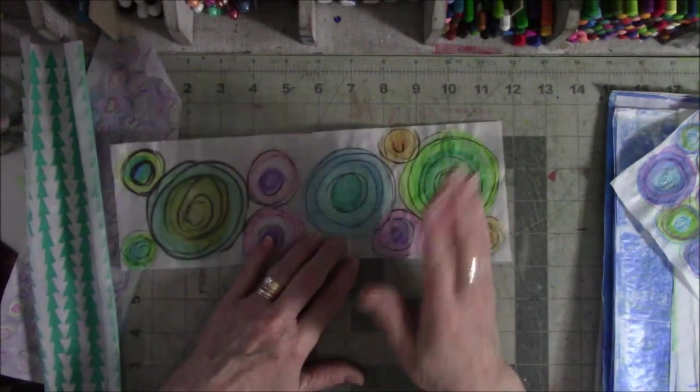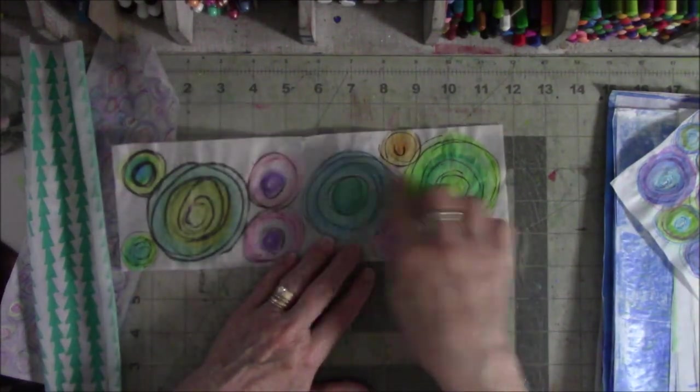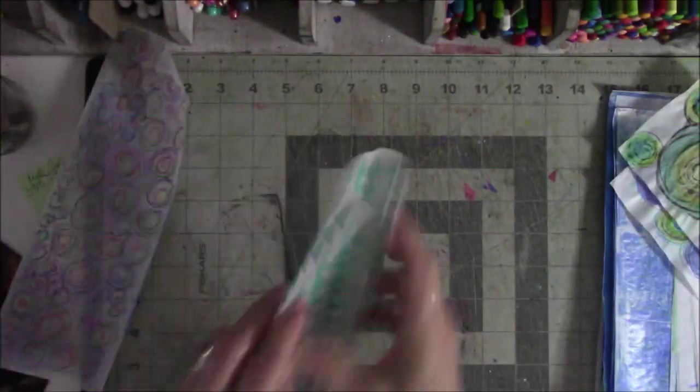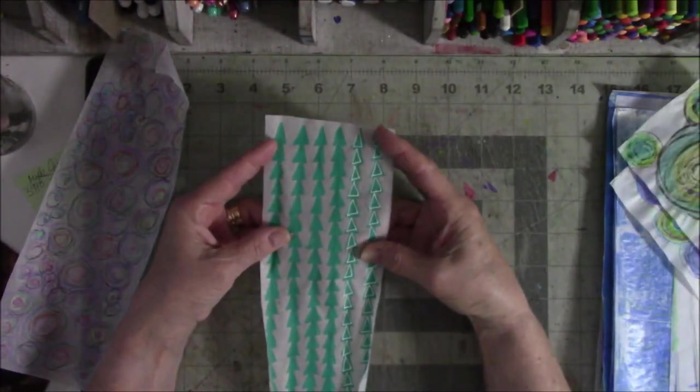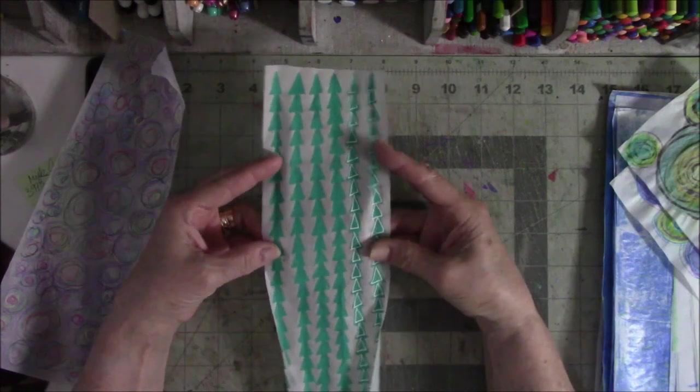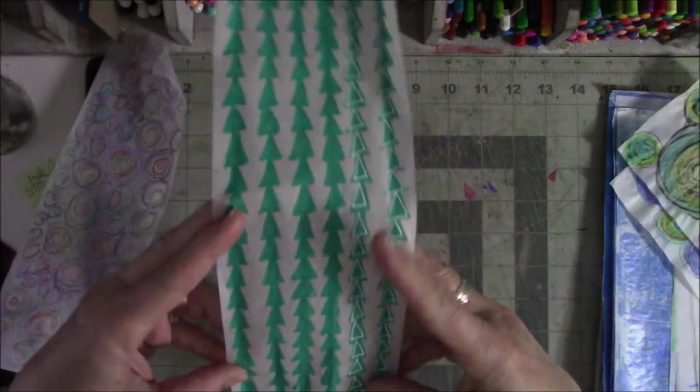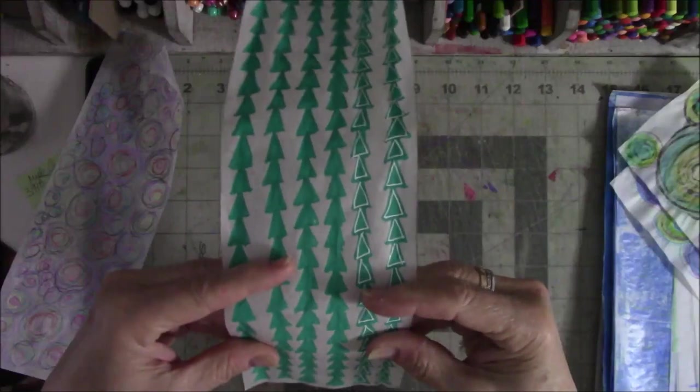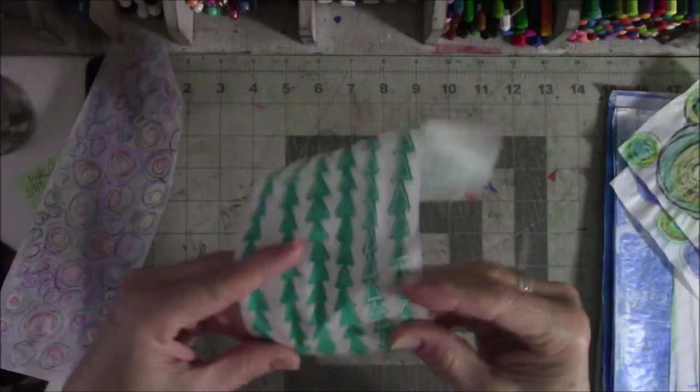That when it dried and I dried it with the heat gun, it did much better. This is Posca with just the white uniball on the arrows. I just like the way it sounds too.